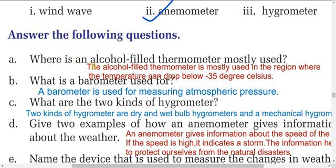What is an alcohol-filled thermometer mostly used for? The alcohol-filled thermometer is mostly used in regions where the temperature can drop below minus 35 degrees Celsius — that is, in very cold regions.